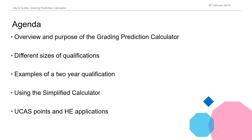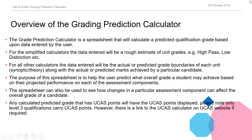I'm going to hand over to Rhys who will give you an overview of the grading prediction calculator. The main calculators on this spreadsheet will calculate a predicted qualification grade based upon marks and grade boundaries entered by the user. There is also a simplified calculator page which will still calculate a predicted qualification grade; however, on this page instead of entering marks and grade boundaries, the user will select estimated grades for each assessment component from a drop-down box.